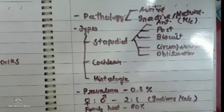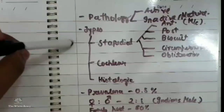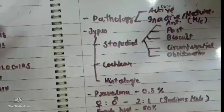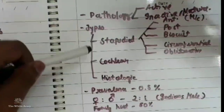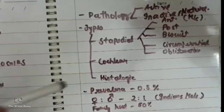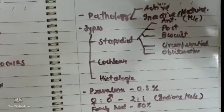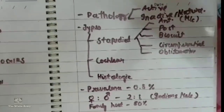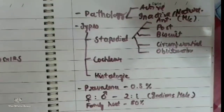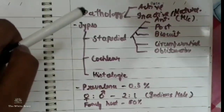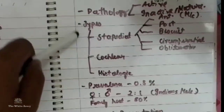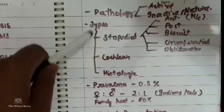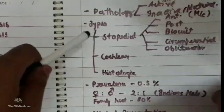There are three types of otosclerosis: stapedial type, where foci of ossification are around the stapes; cochlear type, where ossification is around the cochlear region resulting in sensorineural deafness; and histologic type, referring to microscopic foci of bone formation that are not clinically relevant. The stapedial type is the most common and most commonly seen in patients.